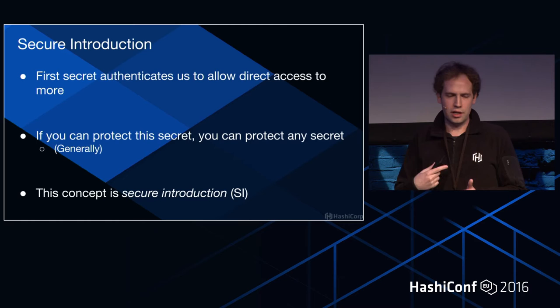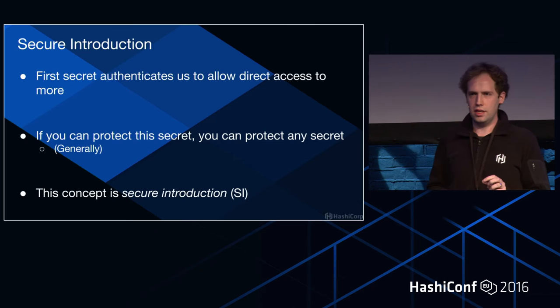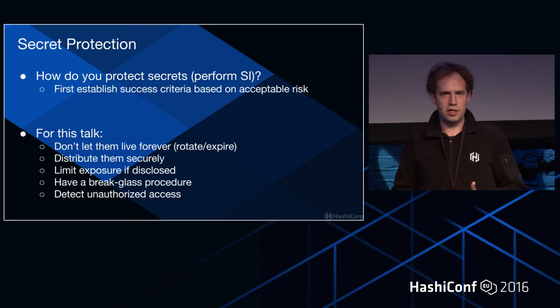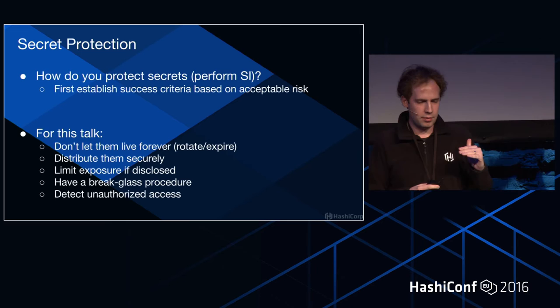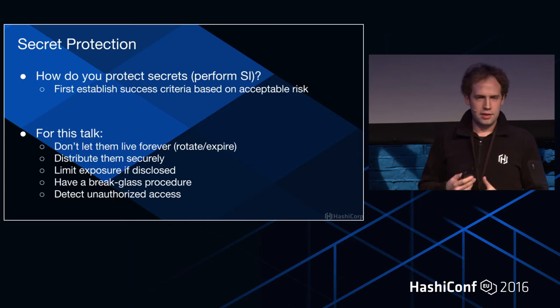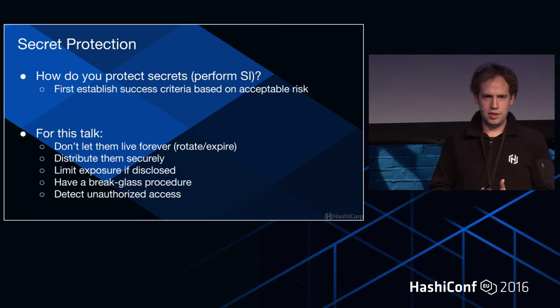This concept is secure introduction — getting that first secret to a container. How do you protect secrets? You have to understand your success criteria — what does it mean to decide that your secret has been protected? For this talk, we'll establish five: one, don't let them live forever — secrets must rotate or expire; two, distribute them securely; three, limit exposure if disclosed; four, have a break glass procedure; and five, detect unauthorized access.